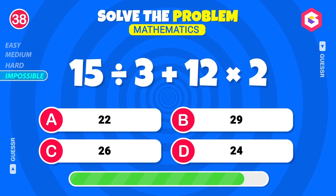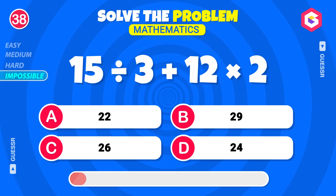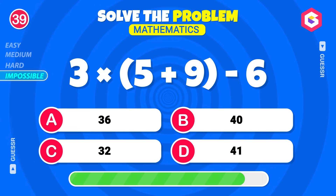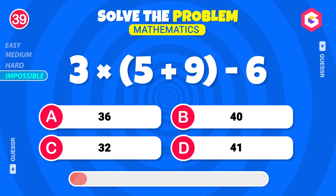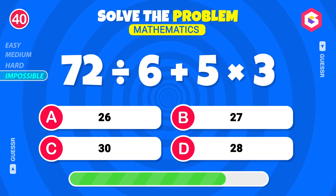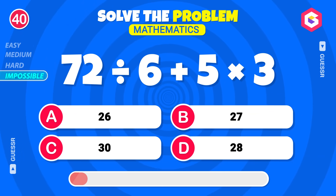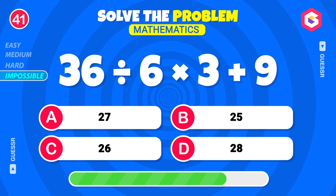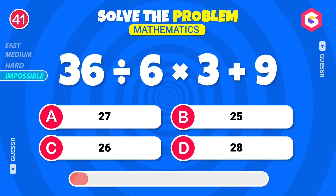Impossible Level! What is 15 divided by 3, then add 12 into 2? 22! 29! Solve this equation! 36! Let's see if you can solve this! The correct answer is 27! How much is 36 divided by 6 into 3, then add 9? 27!